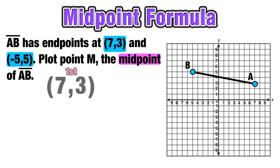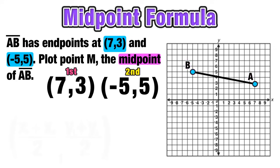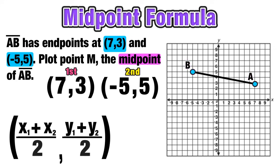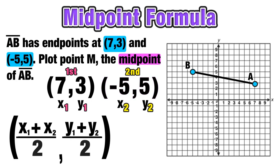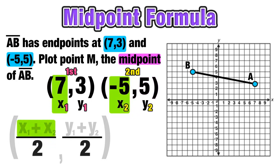Let's write down the coordinates: A, our first point, at (7, 3) and B, our second point, at (-5, 5). We're prepping ourselves to substitute the right values into the midpoint formula. Since (7, 3) is the first point, that's going to be X₁, Y₁, and since (-5, 5) is the second point, that's going to be X₂, Y₂.